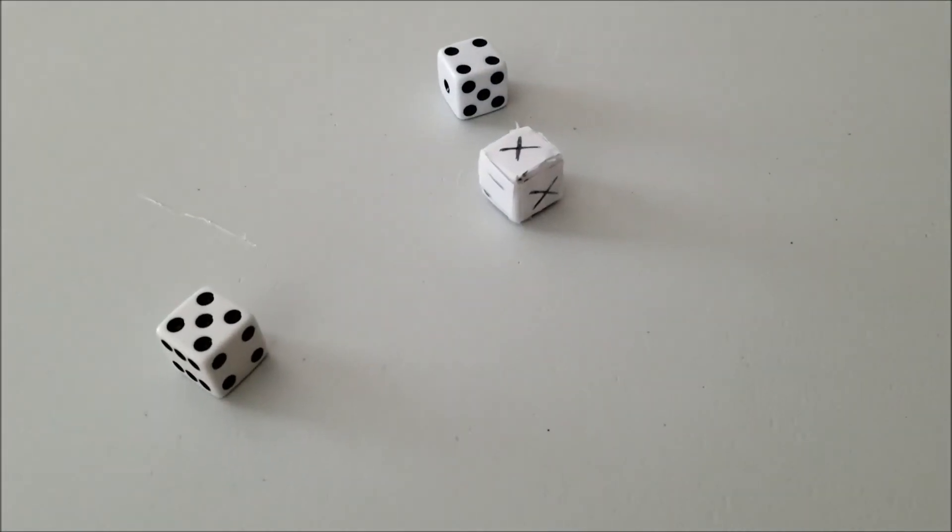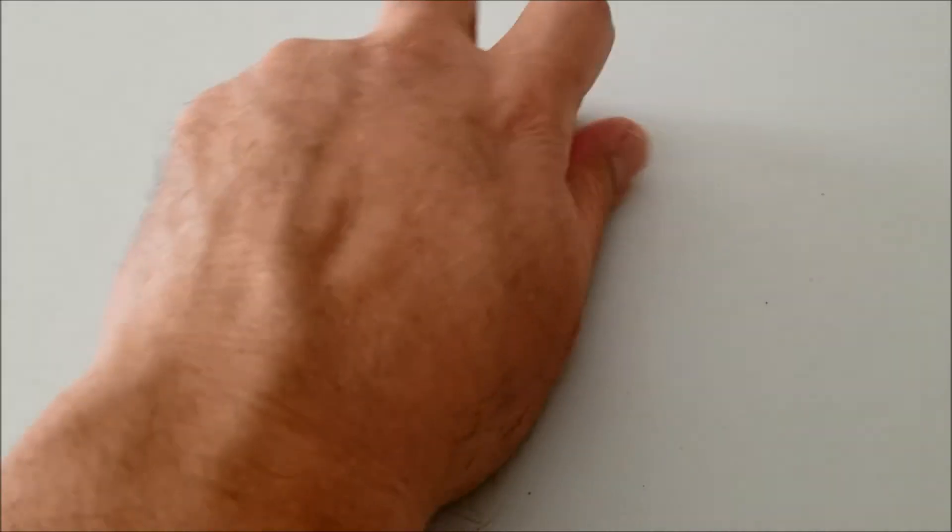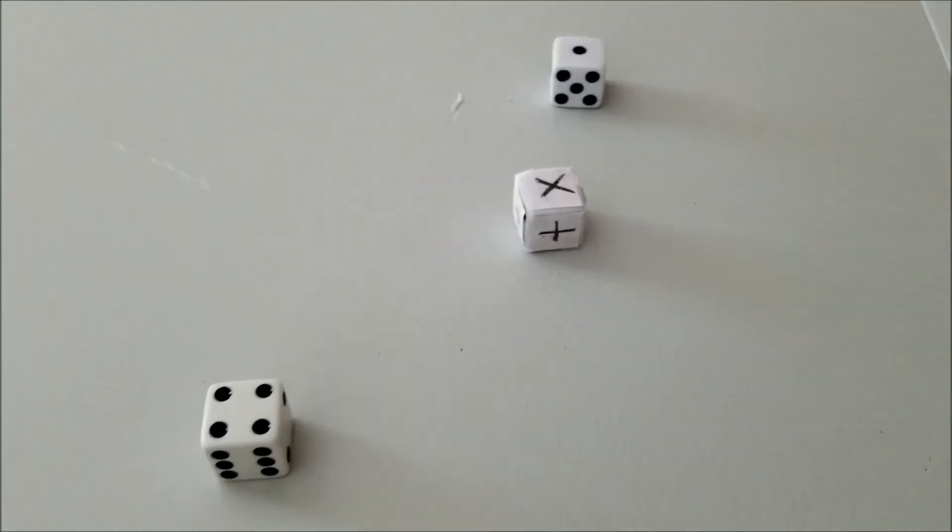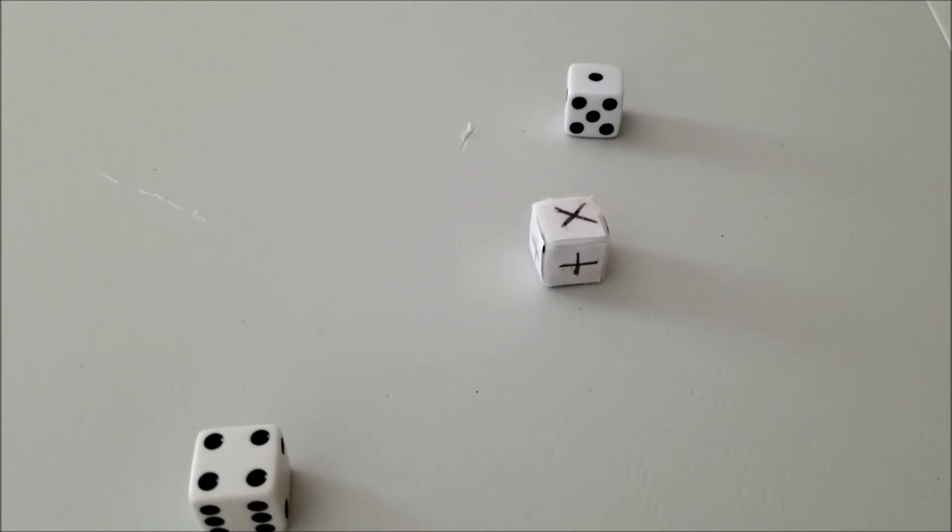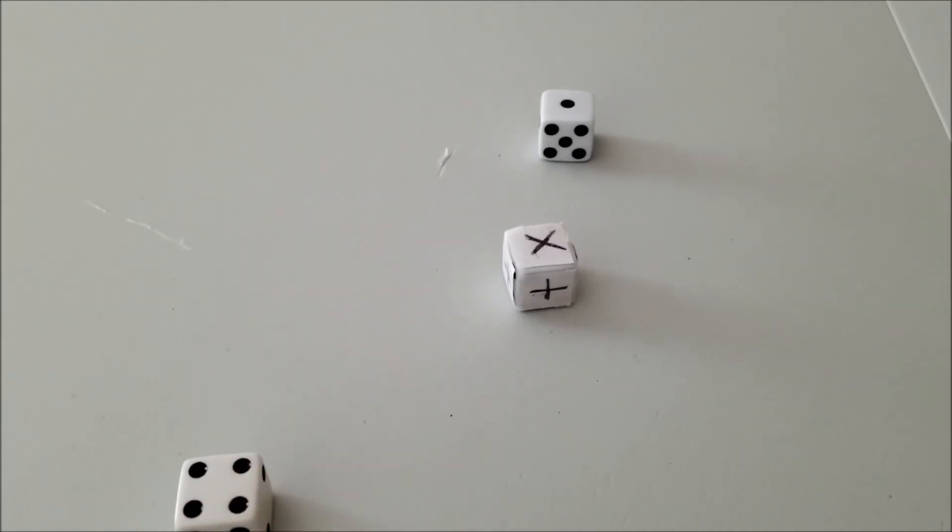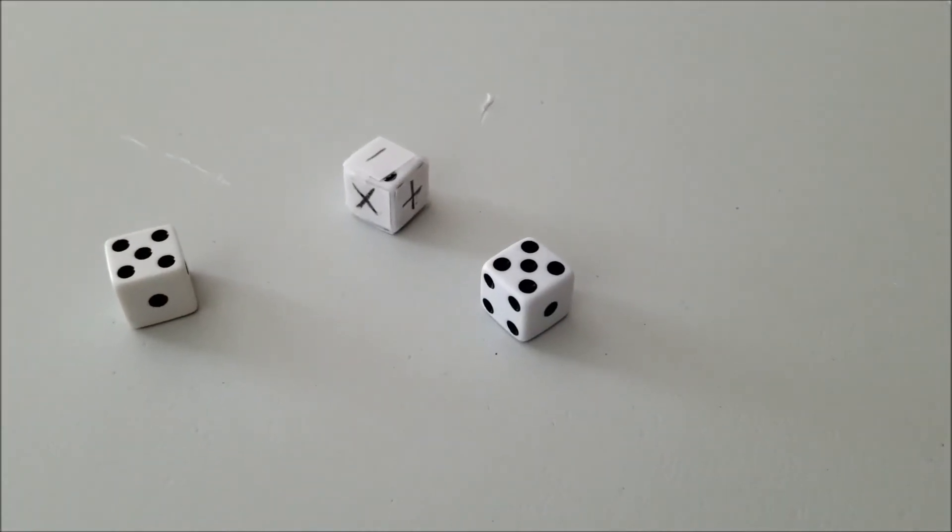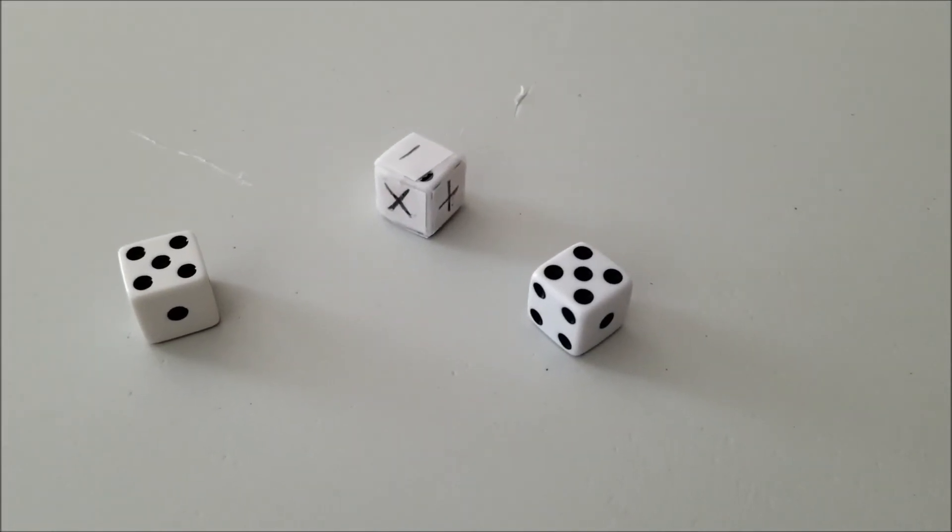So this is just something real resourceful because I think everybody has dice around the house. Four times one is four. So it's just going to be one of those things where it's neat. Five minus five is zero.